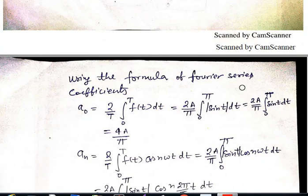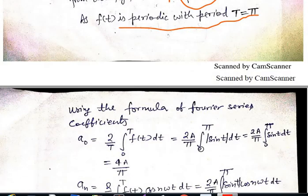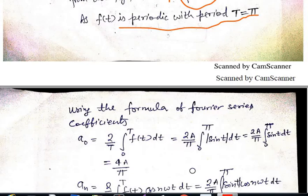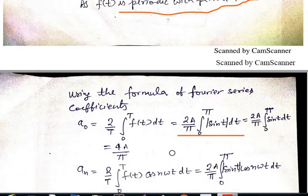Using the Fourier series coefficient formula to find a₀: (2/T) integration from 0 to T of f(t) dt, where f(t) = A·|sin(t)|. Since sin(t) is always positive in 0 to π — sine is positive in the first and second quadrant — |sin(t)| can be written directly as sin(t). After solving this integration, we get a₀ = 4A/π.